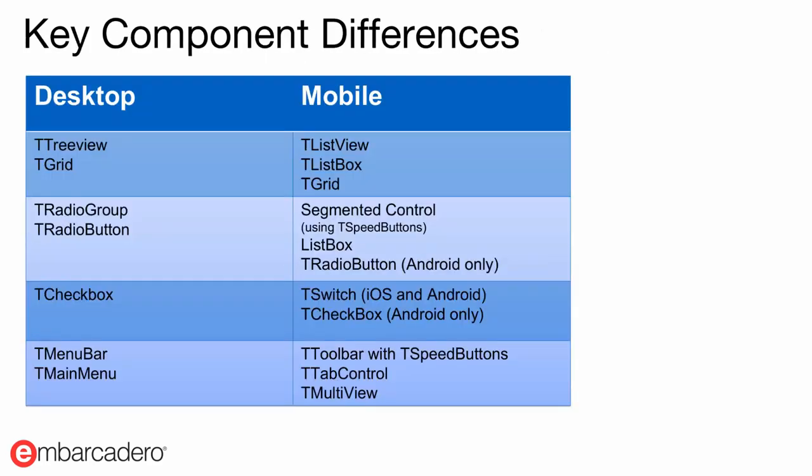Now let's have a look at the key component differences — this is a really good table if you're coming from desktop development. If you're currently using TTreeView or TGrid in your Windows applications, on mobile you'd be looking at TListView, TListBox, or TGrid. I would really recommend using TListView. We also have something called the items designer that lets you easily create custom layouts with multiple images, labels, glyph buttons, etc. There's also TListBox, which is designed for short input forms or settings screens, and TGrid if you're building an iPad application.